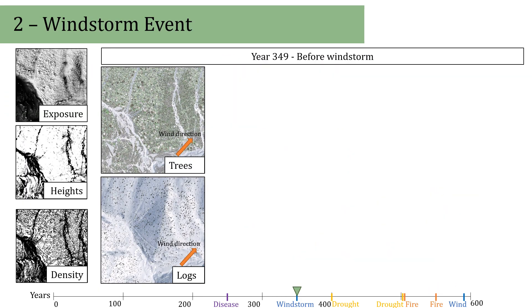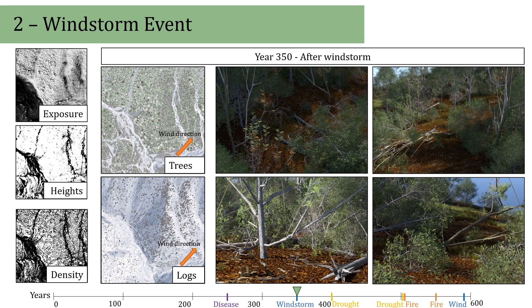The windstorm event strongly impacts the vigor of those trees with large wind exposure and in open areas, which results in a consequent loss of branches.